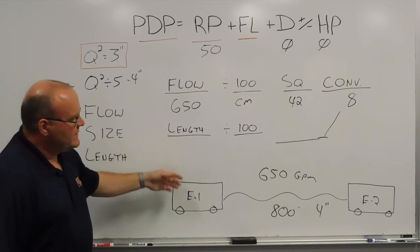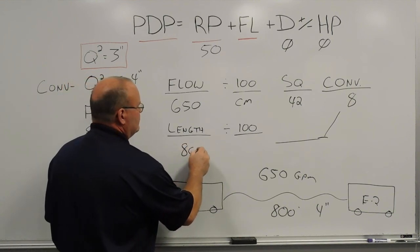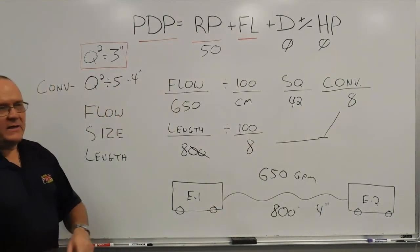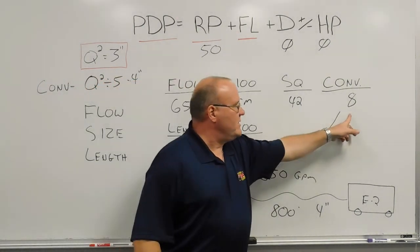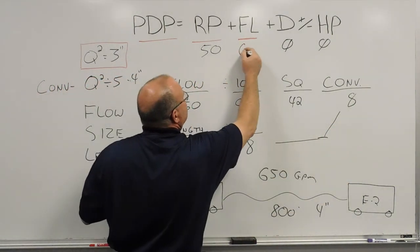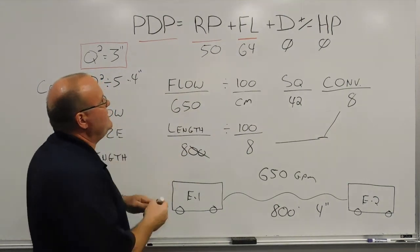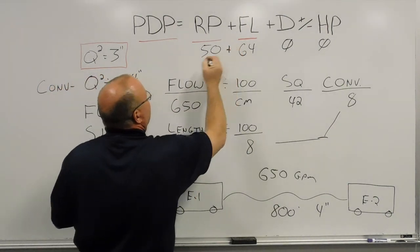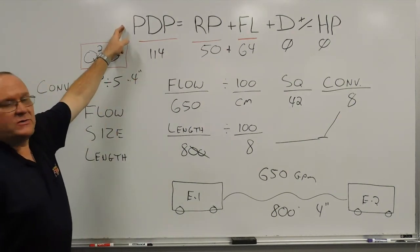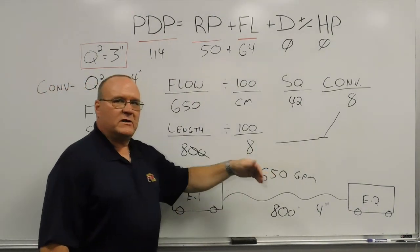Now we deal with our length — 800 feet of 4-inch hose. We take the 800, divide by 100, which is essentially knocking the zeros off, giving us 8. Then we multiply the length by the friction loss: 8 times 8 gives us 64 pounds of friction loss. No devices, no head pressure. So we add 64 and 50, giving us 114 pounds of pump discharge pressure — that's the residual pressure of 50 and the friction loss of 64 from engine 1 to engine 2 in a relay pump-to-pump.